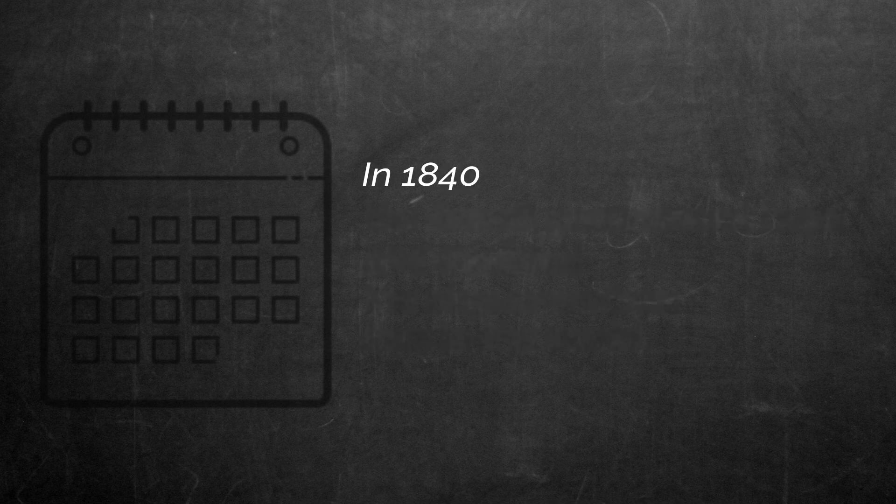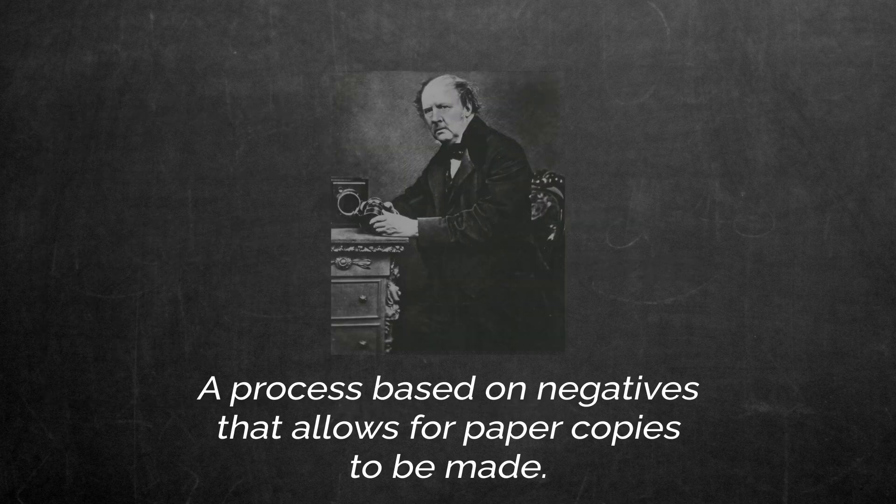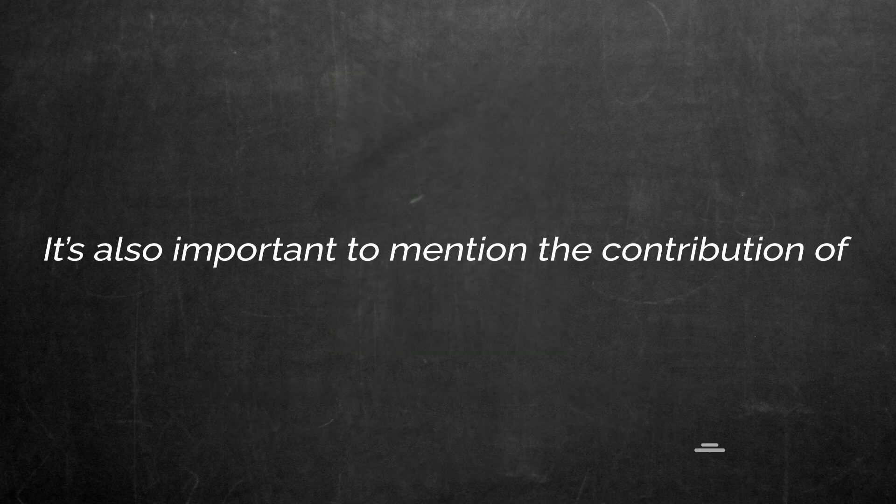In 1840, Henry Fox Talbot unveils the Calotype. Calotype was a process based on negatives that allows for paper copies to be made.